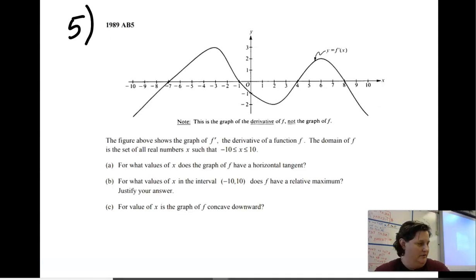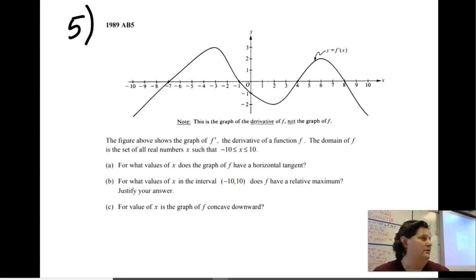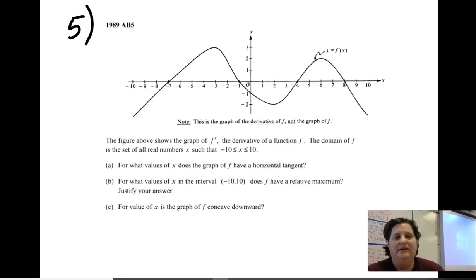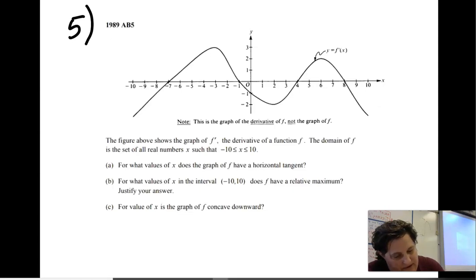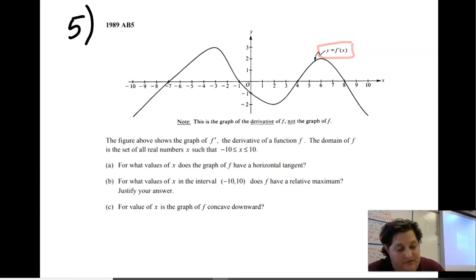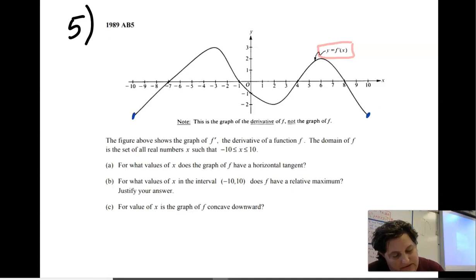All right, so as I was looking through here, it really feels to me like number 5 and 6, number 7 and 8 are going to be very, very good test questions. Number 4 was a little weird, but let's check this out. Note: this is the graph of the derivative of f, not the graph of f. They will usually write that a bunch of times, just to make sure you realize the figure shows the graph of f prime, the derivative of the function. The domain is the set of all real numbers between negative 10 and 10, so this is on a closed interval.